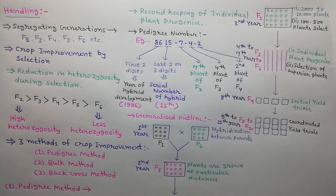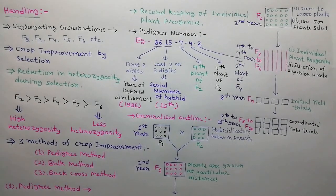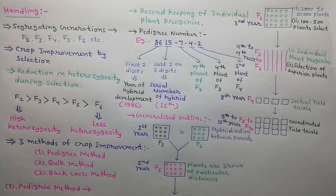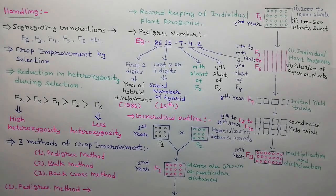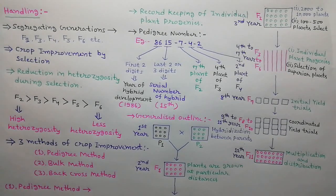From the ninth to eleventh year, F8, F9, and F10 generations are raised and coordinated yield trials are performed. In the twelfth year, F11 generation is raised to multiply the seeds. These seeds are then distributed to farmers.